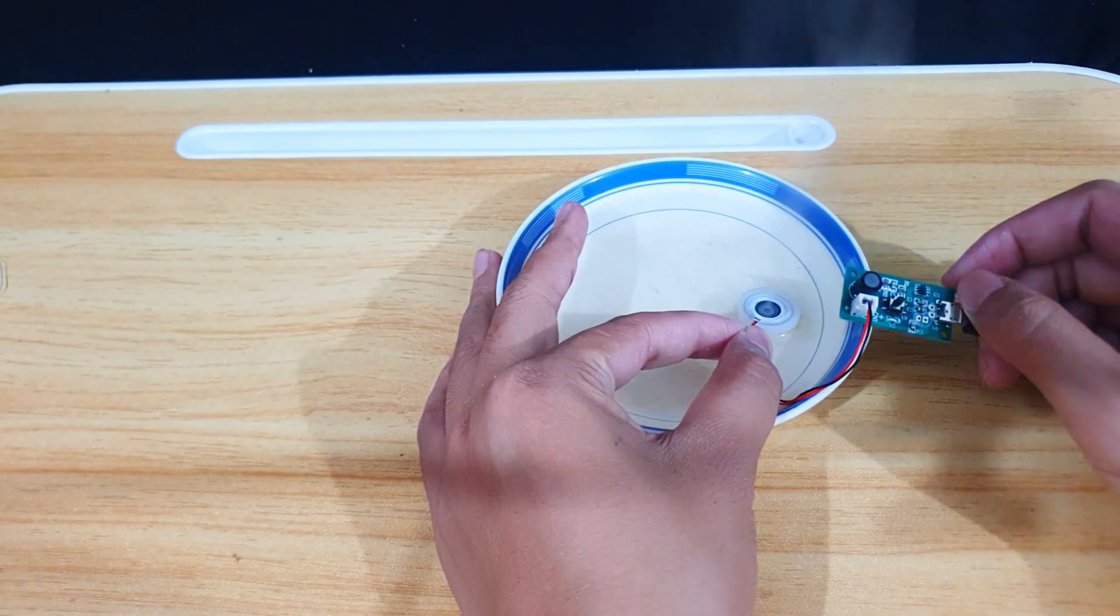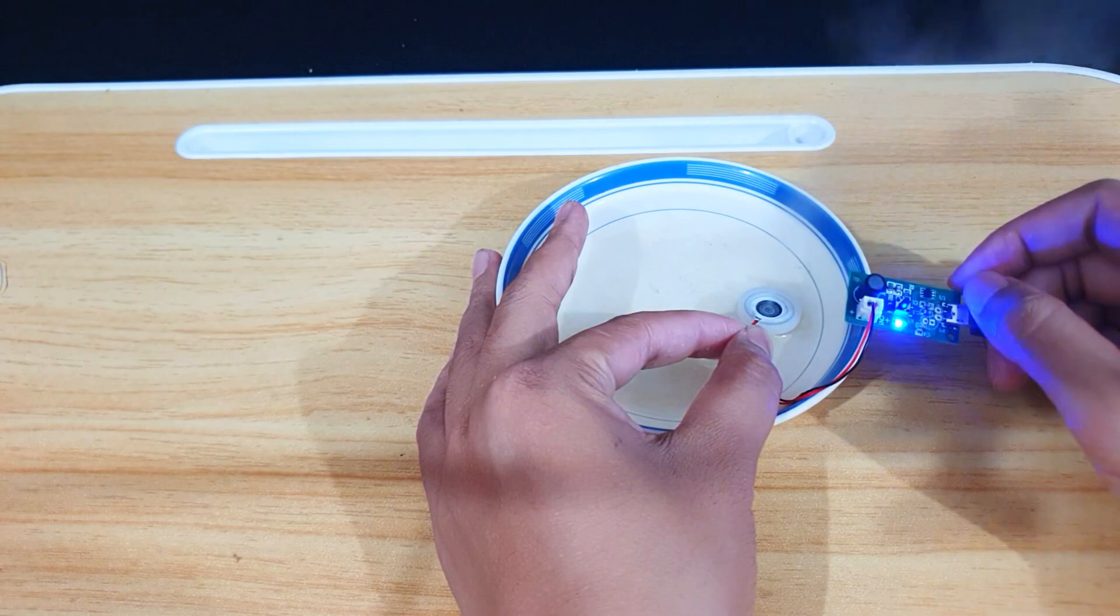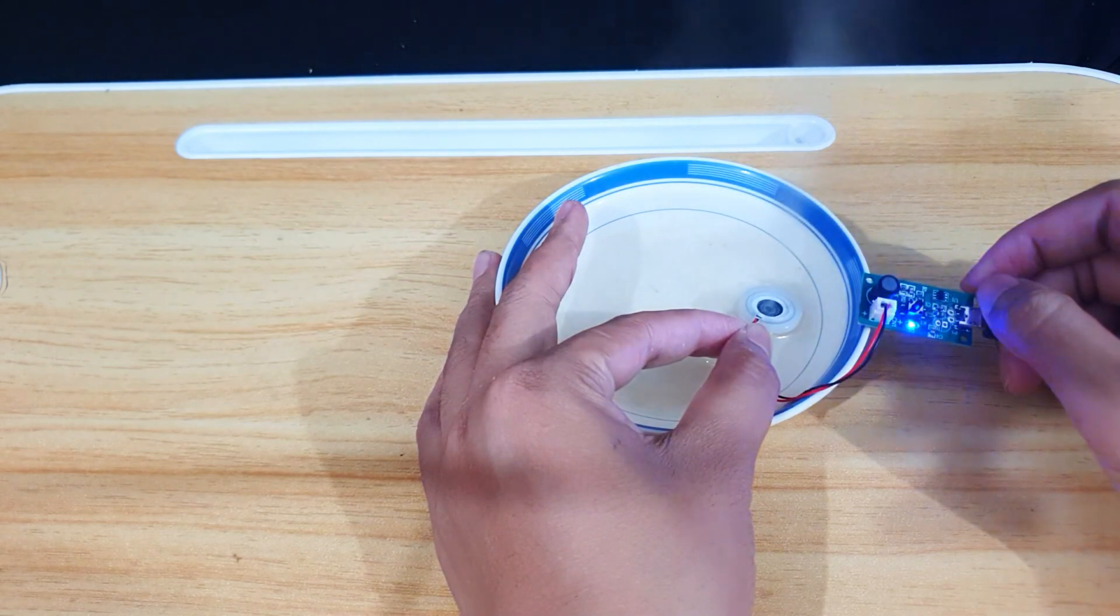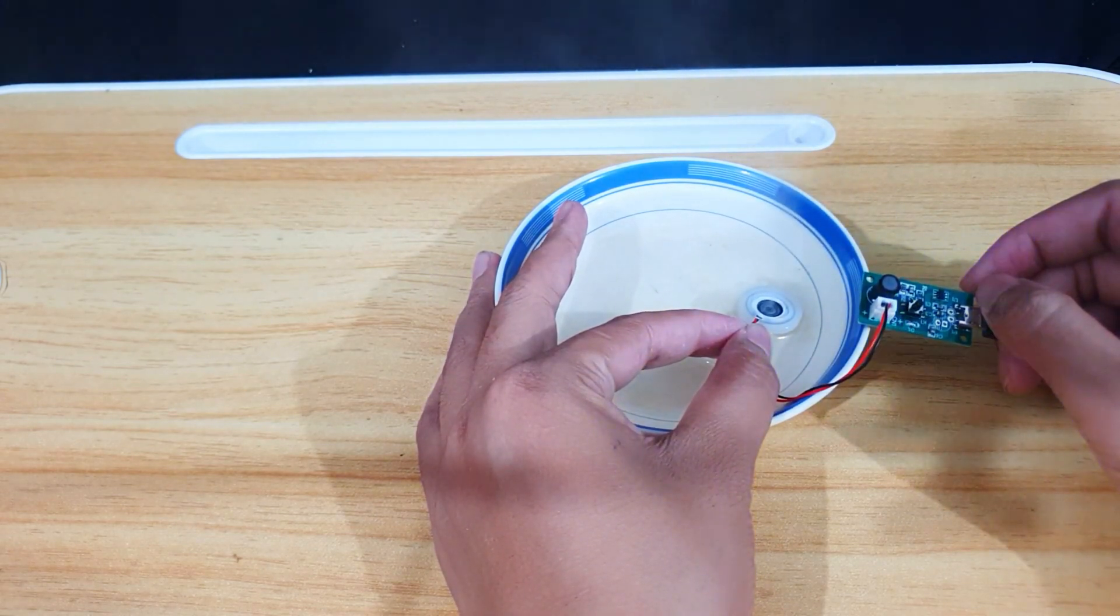In this mode, the mist maker will turn on and off at fixed intervals, creating a controlled cycle of humidity. This feature is great if you want to maintain a consistent level of moisture without running it continuously.